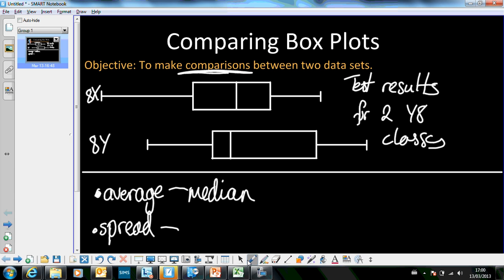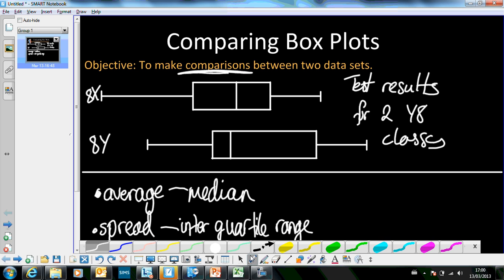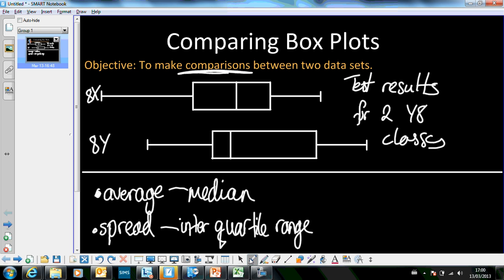So the range is not a good measure of spread because it can be affected by one or two outliers. So instead, we're going to use as our measure of spread the interquartile range. That's the range between the upper quartile and the lower quartile.